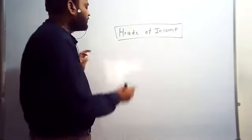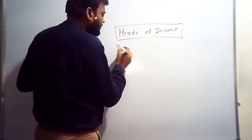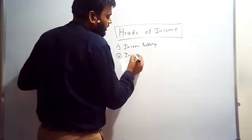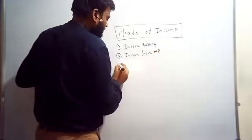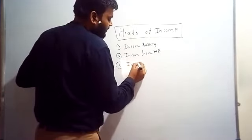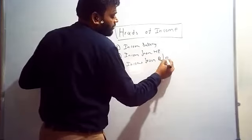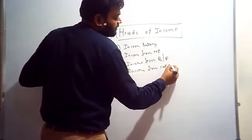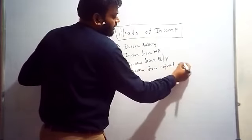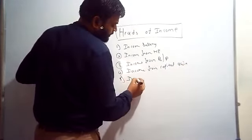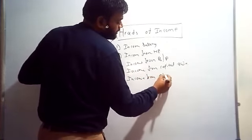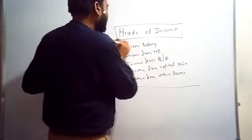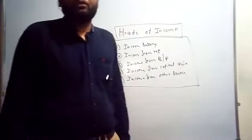Yesterday we discussed about the heads of income. The first one is income from salary, second is income from house property, third is income from business and profession, fourth is income from capital gain, and fifth is income from other sources. These five are the heads of income.